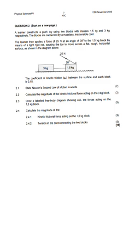Question 2. A learner constructs a push toy by using two blocks with masses 1.5 kg and 3 kg respectively. The blocks are connected by a massless inextensible cord. The learner then applies a force of 25 newtons at an angle of 30 degrees to the 1.5 kg block. If we look at this diagram, we can see that there's a force at an angle.